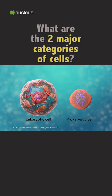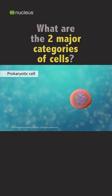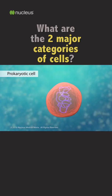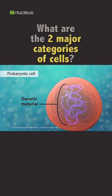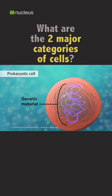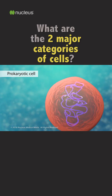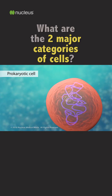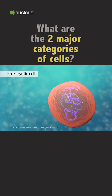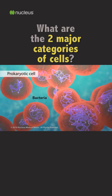The second category is prokaryotic cells. They don't have a nucleus or membrane-enclosed organelles. They do have genetic material, but it's not contained within a nucleus. Prokaryotic cells are always one-celled or unicellular organisms, such as bacteria.